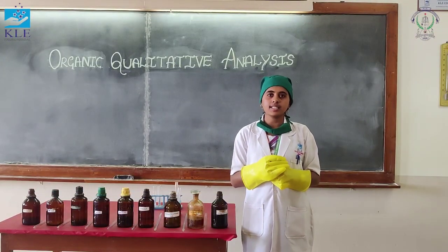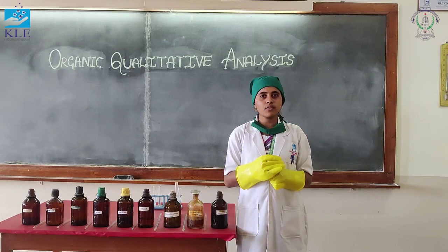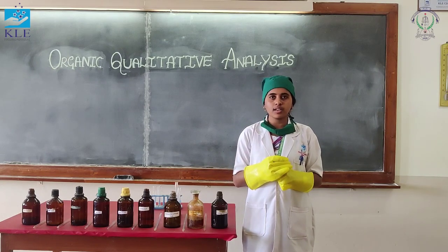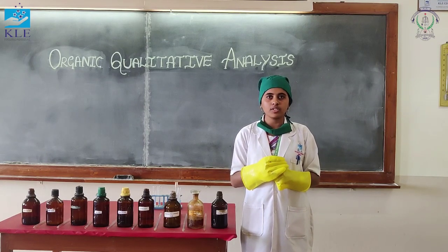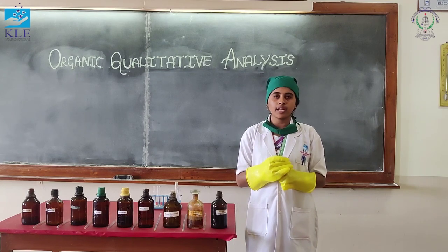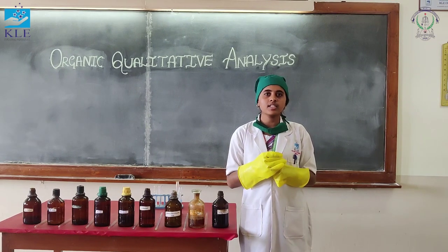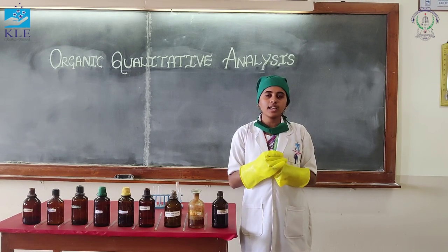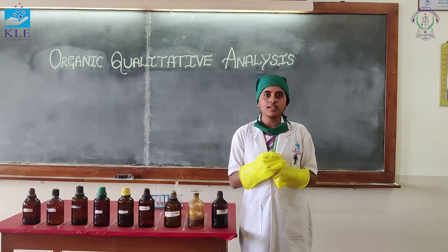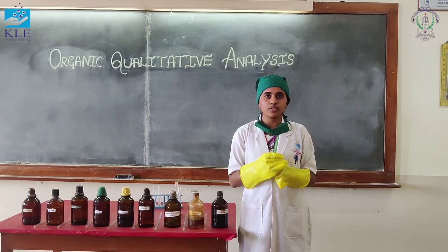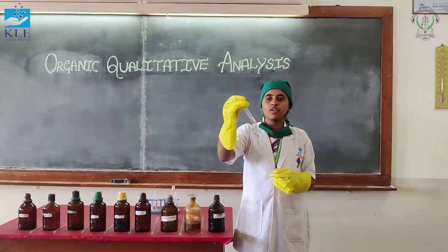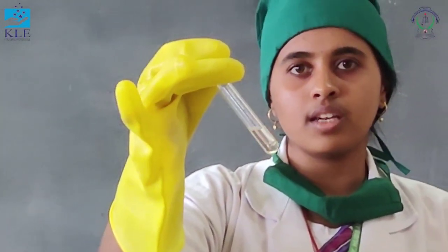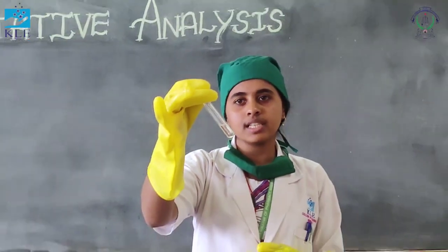In elemental analysis, we test the compound for nitrogen, sulfur, and halogens. First, let us test for nitrogen. Take the stock solution and add FeSO4 and 1 mL of sodium nitroprusside to it. Boil it, cool it, and acidify it with concentrated H2SO4. We have not obtained any green or blue color, which means that nitrogen is absent.